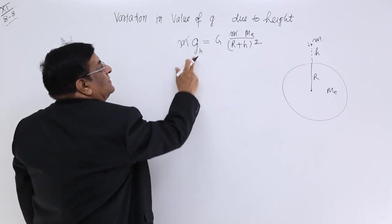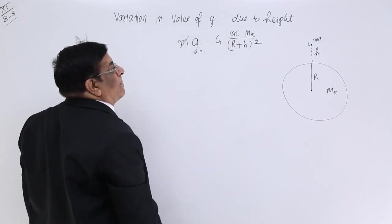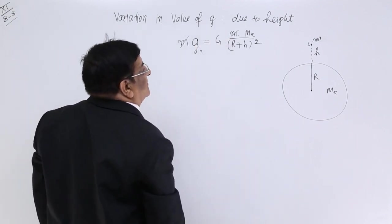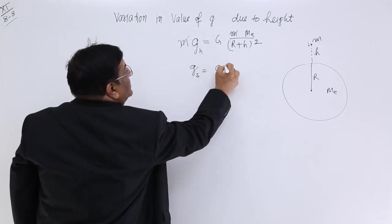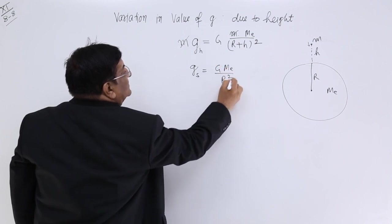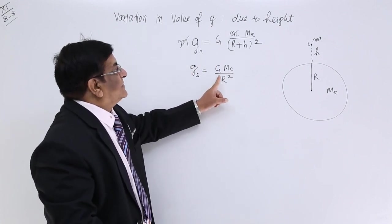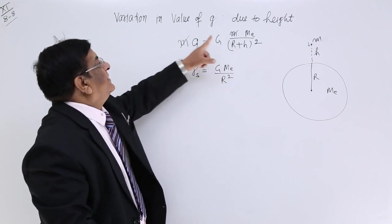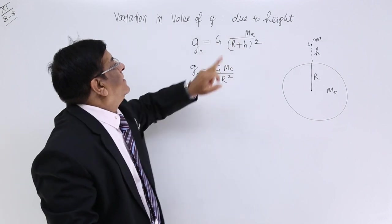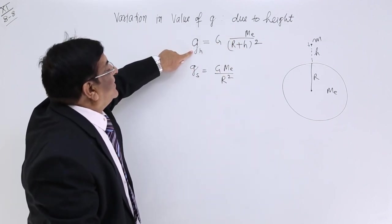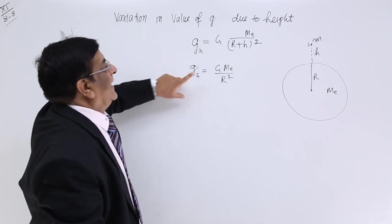Or we can write it g_h. Acceleration at height h is equal to this. Now, what is the acceleration at surface? Acceleration at surface is equal to G M upon r square, which is larger. This denominator is smaller, this denominator is large, therefore this quantity is smaller.